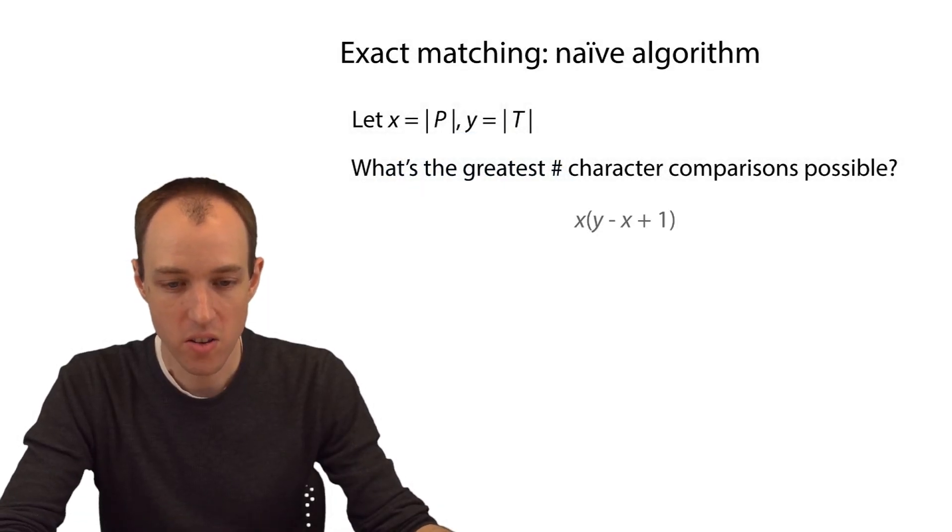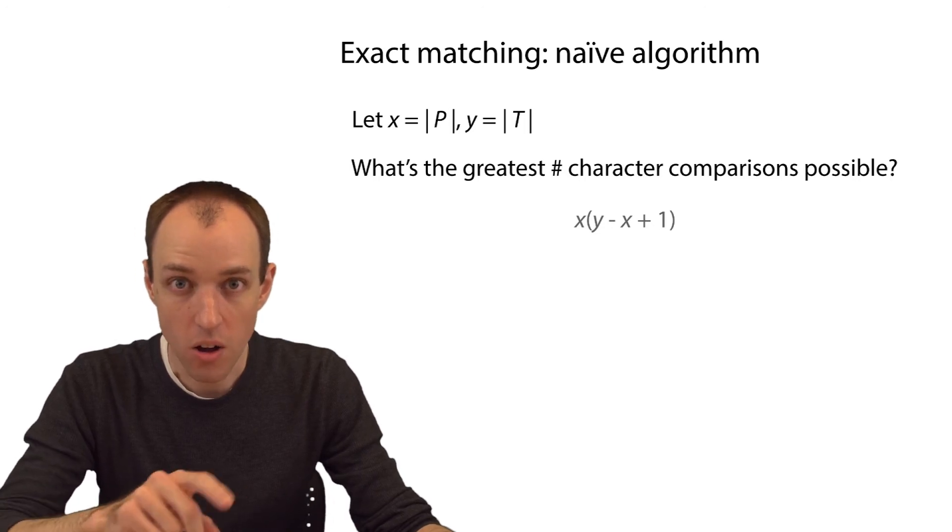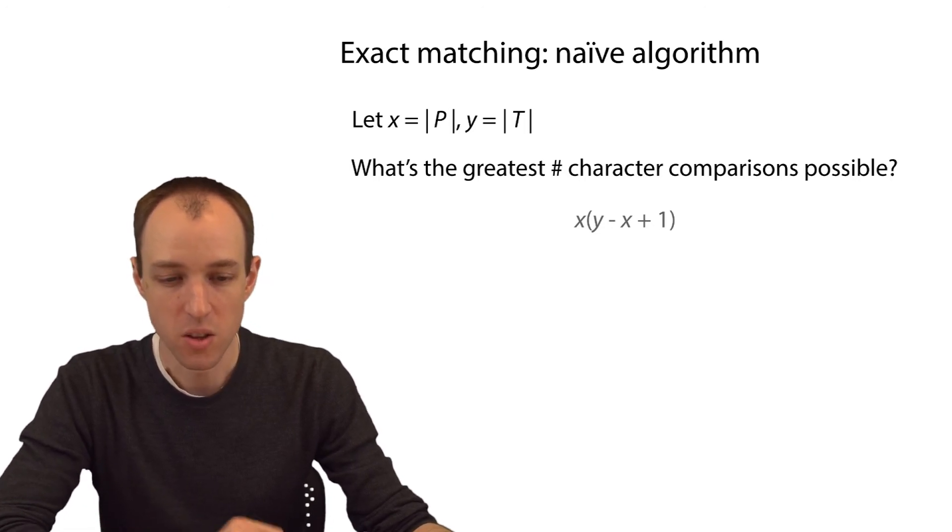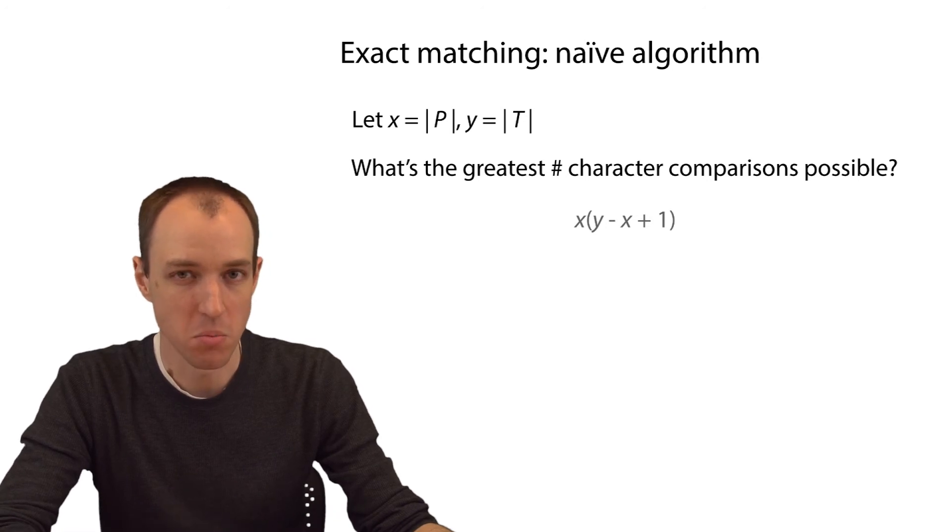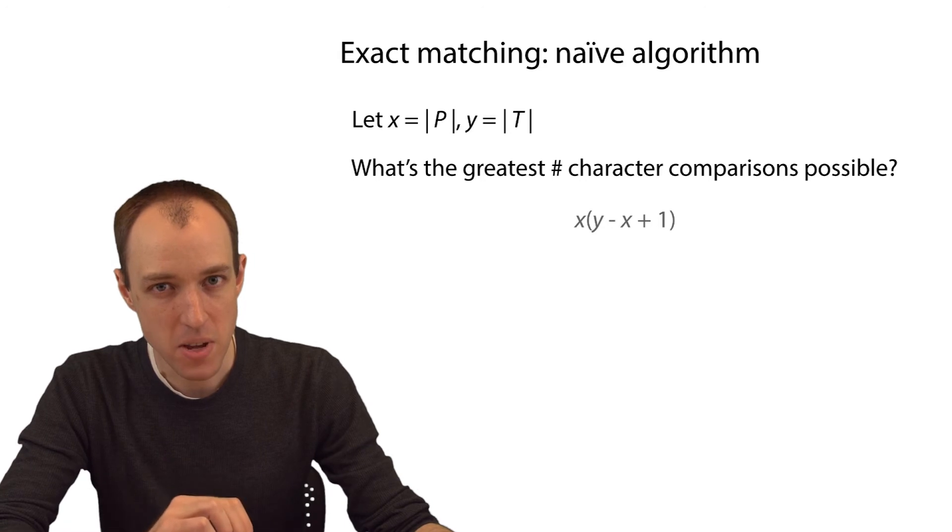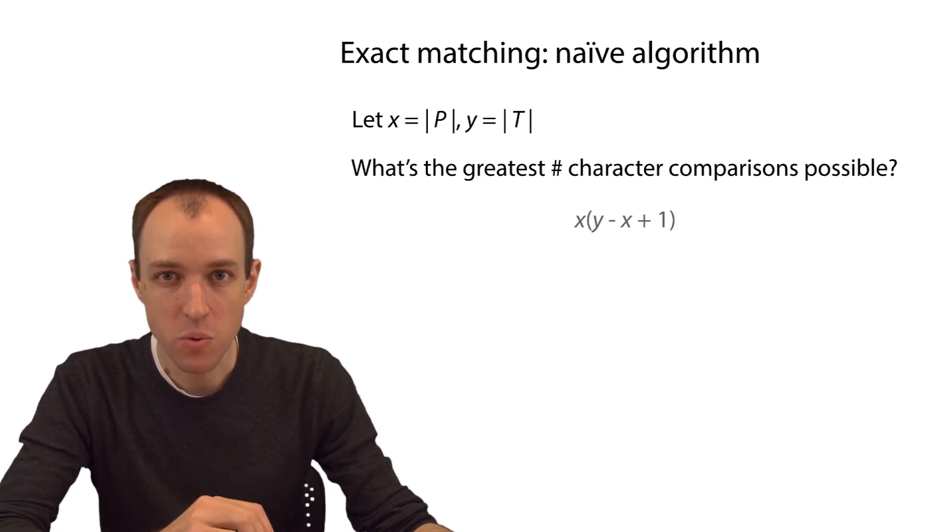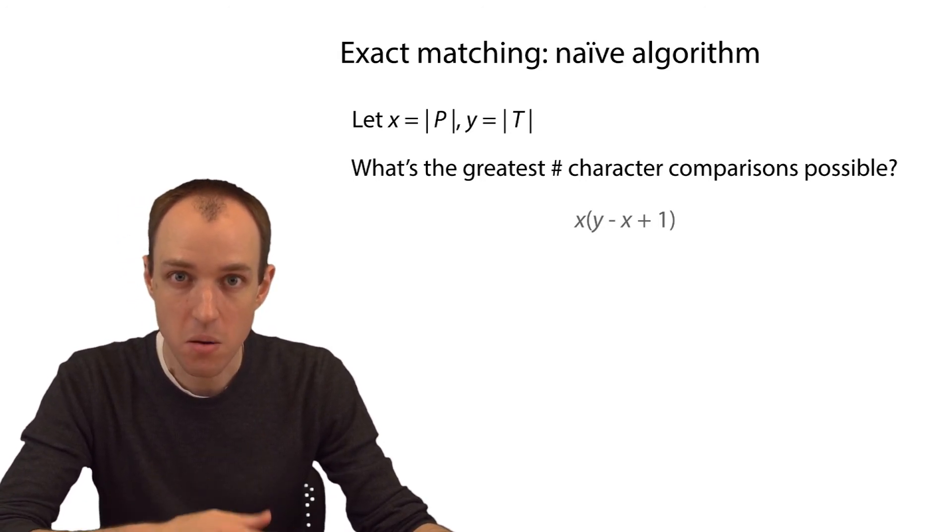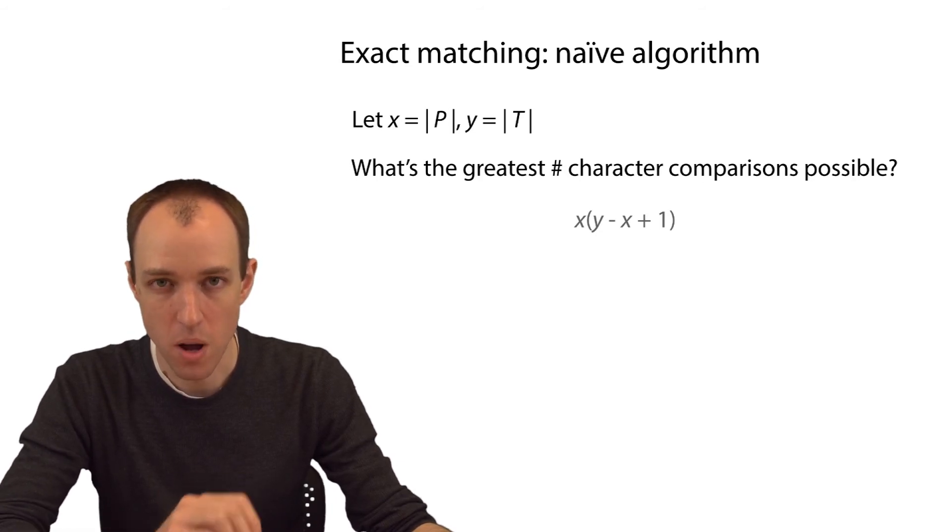The answer is y minus x plus 1 all times x. The y minus x plus 1 again represents the number of possible alignments of the pattern to the text. And for each alignment, the most character comparisons we can do is x, the number of characters in P. So we have to take their product, x times y minus x plus 1.